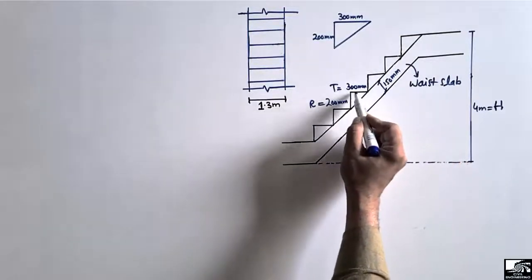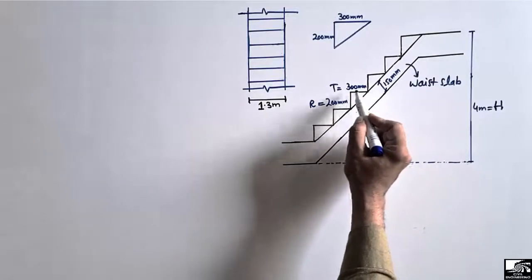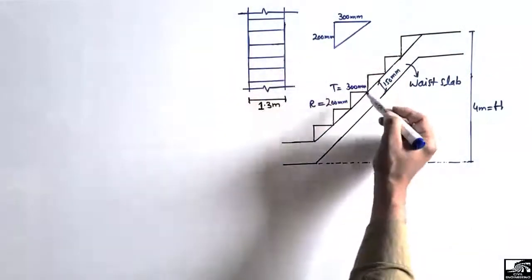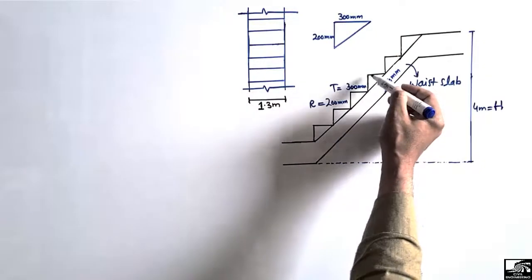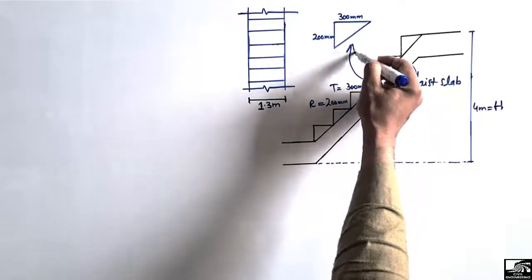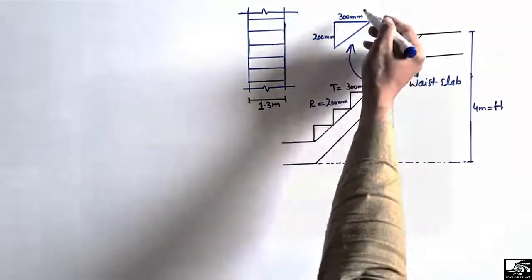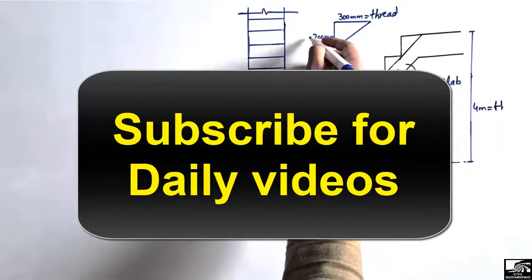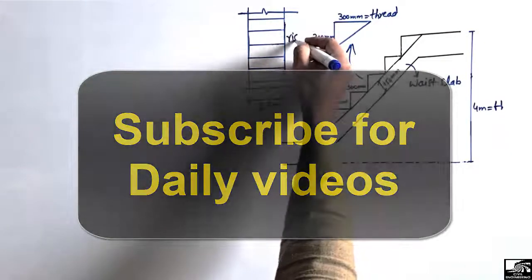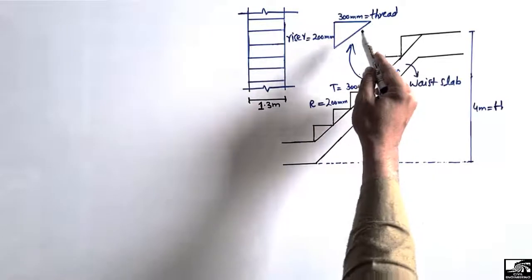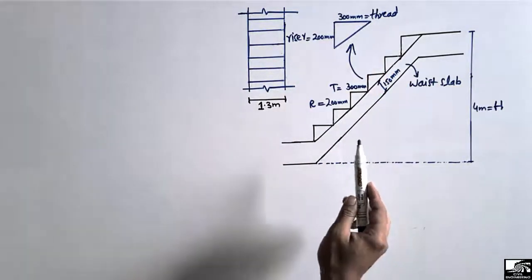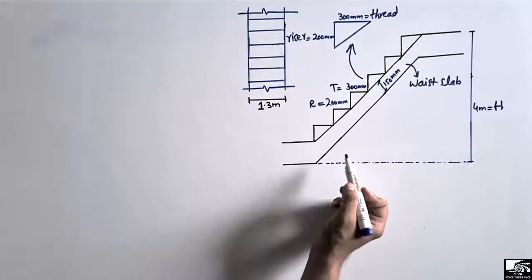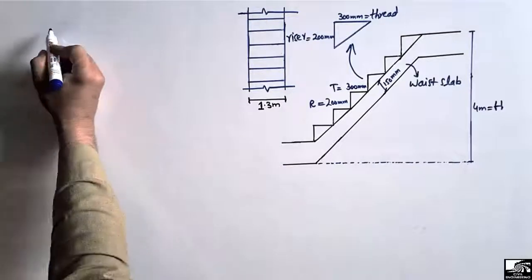In the staircase, the horizontal dimension of a step is called the tread, and the vertical dimension is called the riser. Here you can see one step in detail: the horizontal dimension is the tread and the vertical dimension is the riser. These two make up one step. We are going to do the analysis for the quantity of concrete by solving a series of steps.